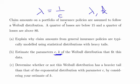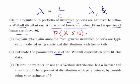Claim amounts in a portfolio of insurance policies are assumed to follow a Weibull distribution. A quarter of the losses are below 15 and a quarter of the losses are above 80. The probability of X, where X is a Weibull random variable, less than or equal to 15 equals 0.25 and likewise the probability X greater than 80 is 0.25 as well.